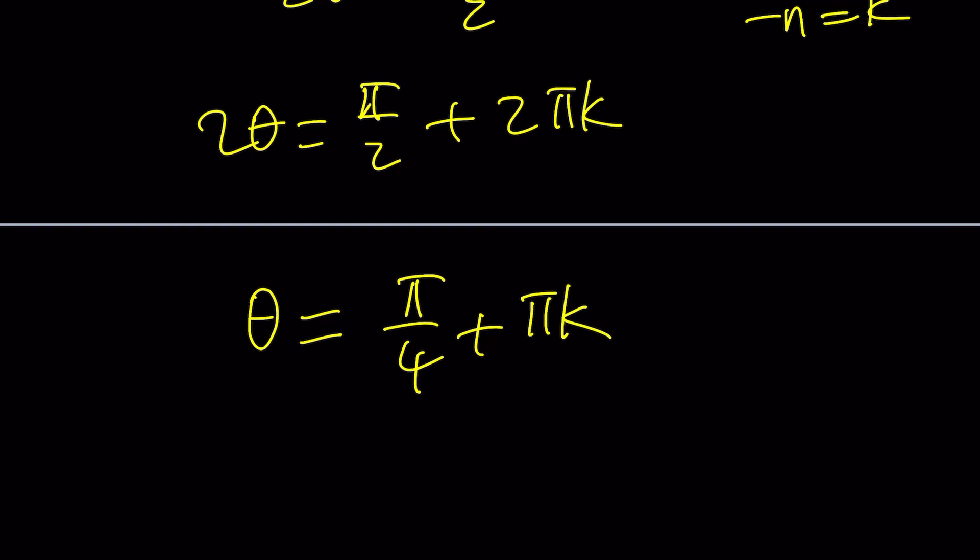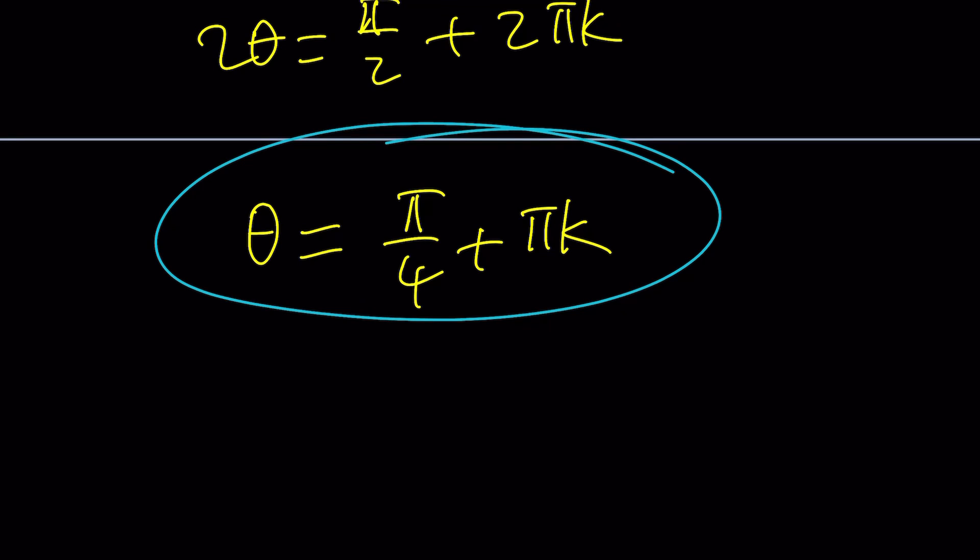Amazing, right? We got all the solutions. This is the general solution, but if you just use k equals 0, you're going to get pi over 4. If you use k equals 1, you're going to get 5 pi over 4, so on and so forth. Make sense? There are infinitely many solutions.